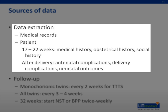The frequency of follow-up was three to four weeks for all twins in the study, with NST or BPP done twice a week starting from 32 weeks of gestation. In addition, monochorionic twins were checked every two weeks for TTTS. If any evidence of TTTS was found, that pregnancy was excluded from the study.